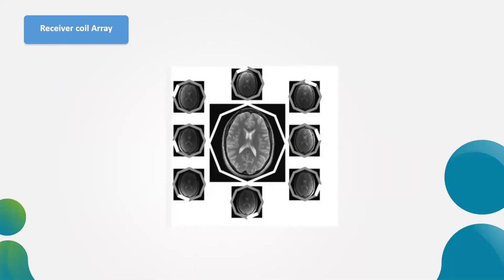Here is an example of a head coil — a circular array made up of eight independent receiver coil elements. Each coil element will be sensitive to the area directly under it, taking the signal from that area and generating a unique view of the object. This provides additional spatial information that can partially replace gradient encoding to reduce scan time.